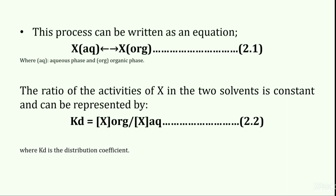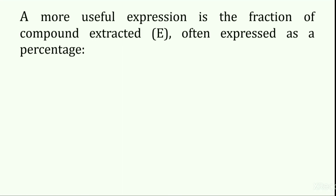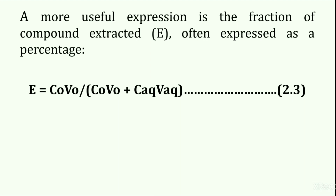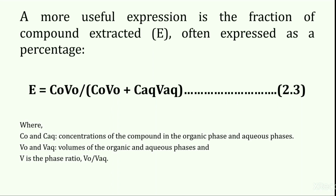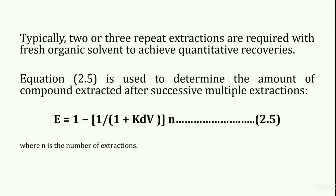A more useful expression is the fraction of compound extracted, often expressed as a percentage. The compound extracted E equals (Co × Vo) divided by (Co × Vo + Caq × Vaq), which is equation 2.3. In this equation, Co and Caq are the concentrations of the compound in the organic and aqueous phases respectively, Vo and Vaq are the volumes of the organic and aqueous phases respectively, and V is the phase ratio which is Vo divided by Vaq.